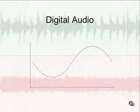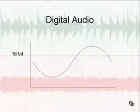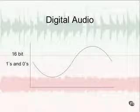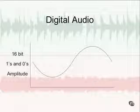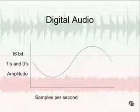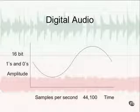The way pulse code modulation works: if we make a little graph, we have our waveform happening from left to right. On the left axis we have our 16-bit — in the example of a CD — and this is our bit depth. This is how many ones and zeros can be used to define the level of that wave, and this defines amplitude: how loud or soft, how much intensity the wave is enacting. On the bottom we have our samples per second, and the standard for CDs is 44,100 samples per second, which is definitive of time as the wave moves from left to right.